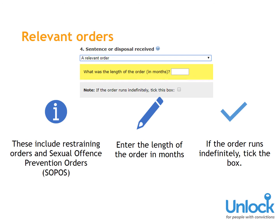Relevant Orders: Relevant orders include things like restraining orders and sexual offence prevention orders. If you've got a relevant order, the calculator will ask you for the length of the order in months. If your order runs indefinitely, you'll need to tick the box. The calculator will then treat it as unspent indefinitely — it can't be spent until the order ends.